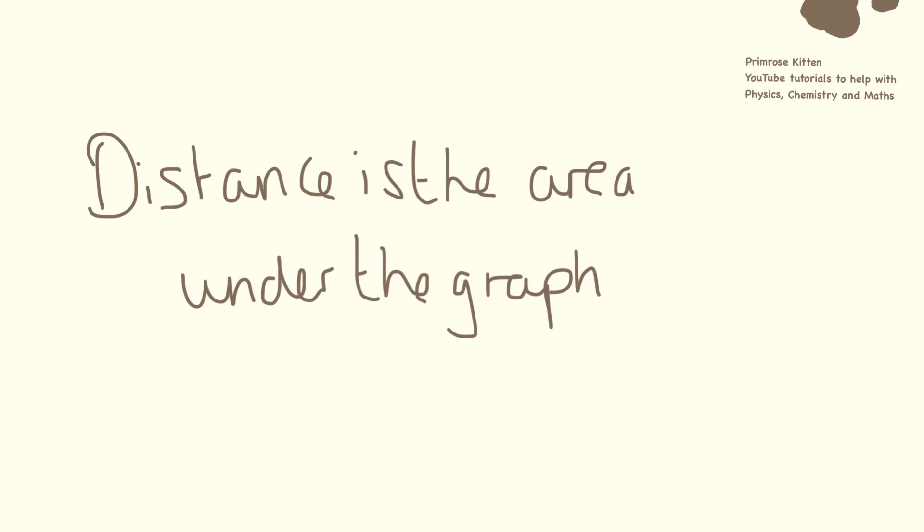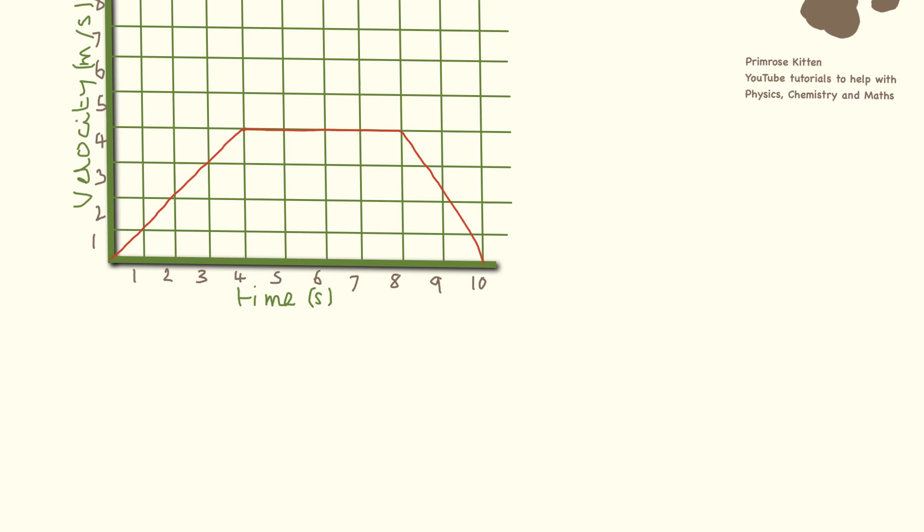The next bit of important maths we need to know is that distance is the area under the graph. So we need to work out the distance travelled in section A here. And this is a triangle. Triangles are half times base times height. So we have half, the base of the triangle along here is 4, the height of the triangle up here is 4, so that equals 8 metres.